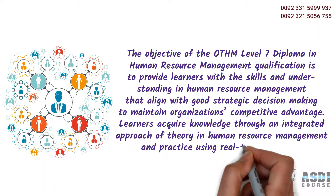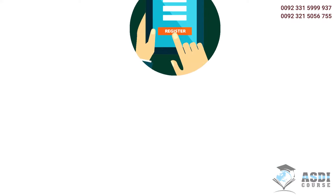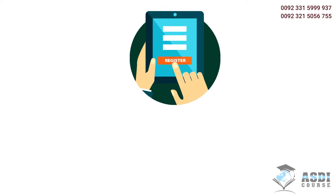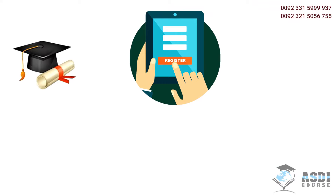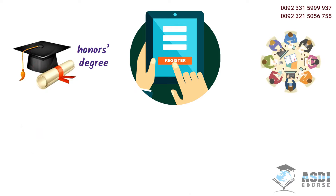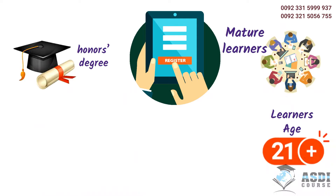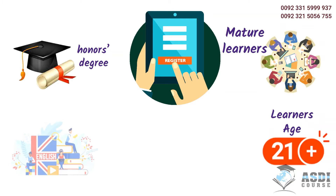For entry onto the Level 7 Diploma in Human Resource Management qualification, learners must possess an honours degree in a related subject, or a UK Level 6 diploma, or an equivalent overseas qualification. Mature learners with management experience are also considered. Learners must be 21 years old or older at the beginning of the course.